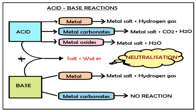Looking into acid-base reactions, there are three main reactions for acids: acids react with metals to give a metal salt and hydrogen gas; acids react with metal carbonates to release metal salt, carbon dioxide, and water; acids react with metal oxides to give metal salt and water. Bases react with metals similarly to acids and also release hydrogen gas, but bases don't react with metal carbonates. When acid and base react with each other, it produces salt and water — this is known as a neutralization reaction. Metal oxides are basic in nature.